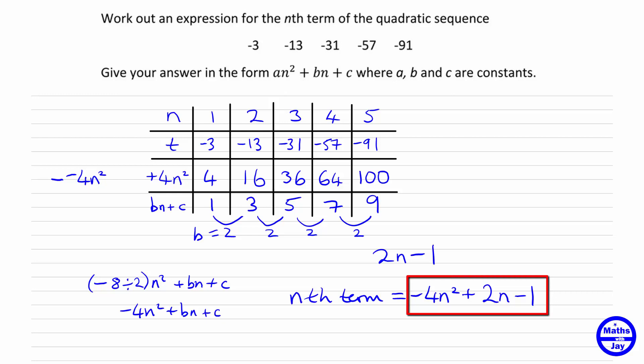And as usual, it's a good idea to check that. So you can choose any value you like. I wouldn't choose 1 because that's a bit too simple. What should we choose? Should we go for 5? So when n is 5, we get minus 4 times 5 squared plus 2 times 5 minus 1. So that's minus 100 plus 10 minus 1. So minus 90 minus 1 minus 91. So it seems to work.